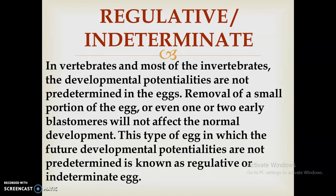In regulative or indeterminate eggs, seen in most invertebrates and vertebrates, the developmental potentialities are not predetermined in the eggs. Removal of a small portion of the egg, or even one or two early blastomeres, will not affect normal development. This type of egg, in which future developmental potentialities are not predetermined, is known as a regulative or indeterminate egg.